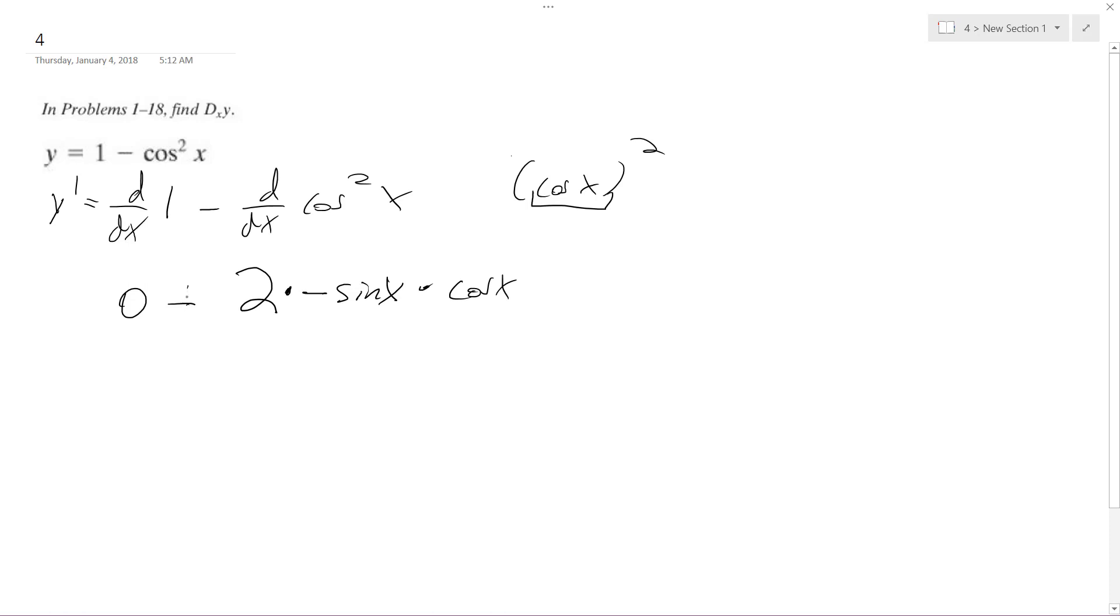So minus minus, that becomes a plus. This minus here and this minus here, so we get 2 sine of x times cosine of x.